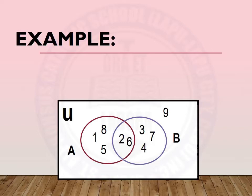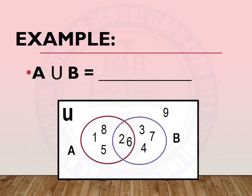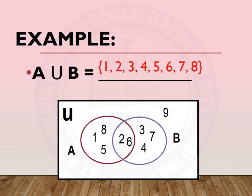Let's have another example. In the given Venn diagram below, there are two sets, set A and set B. We are asked, what is A union B? Union means the combination of all the elements of the given sets. So we are going to write all the elements that belong to set A and all the elements that belong to set B. These are 1, 2, 3, 4, 5, 6, 7, and 8.